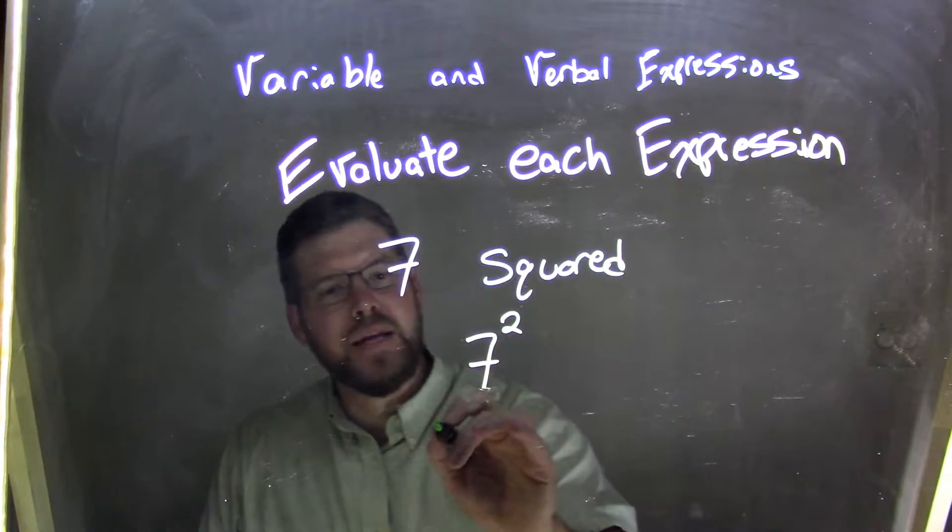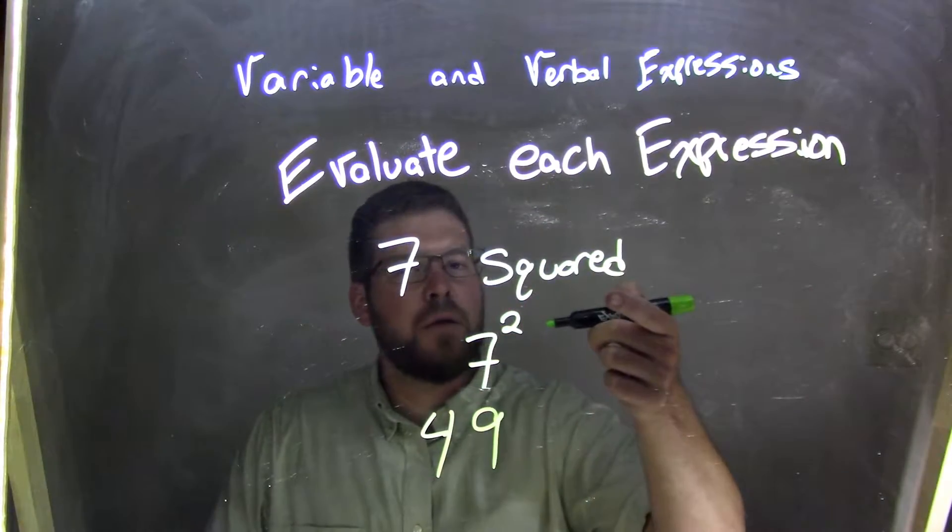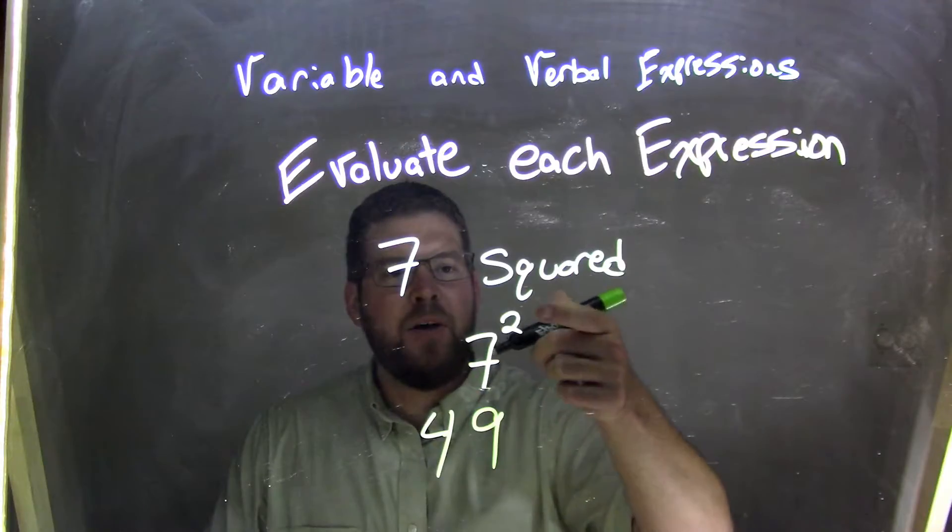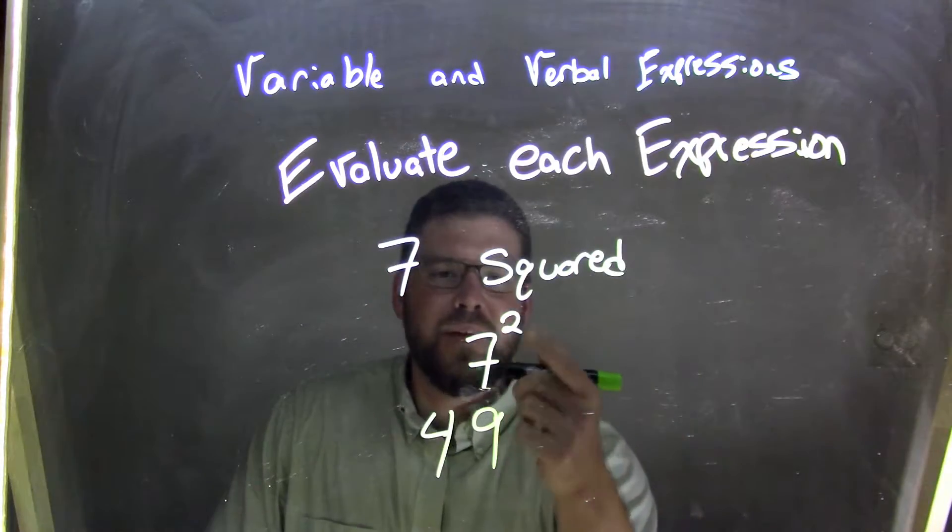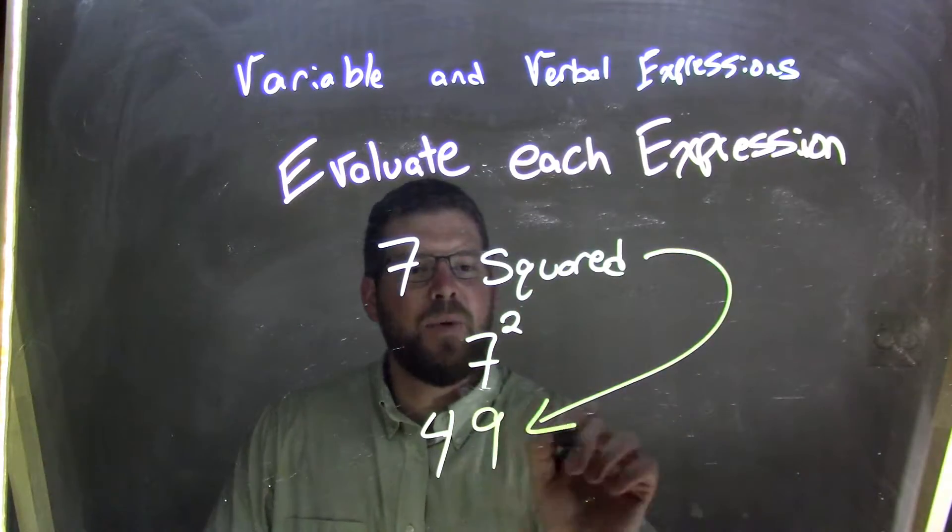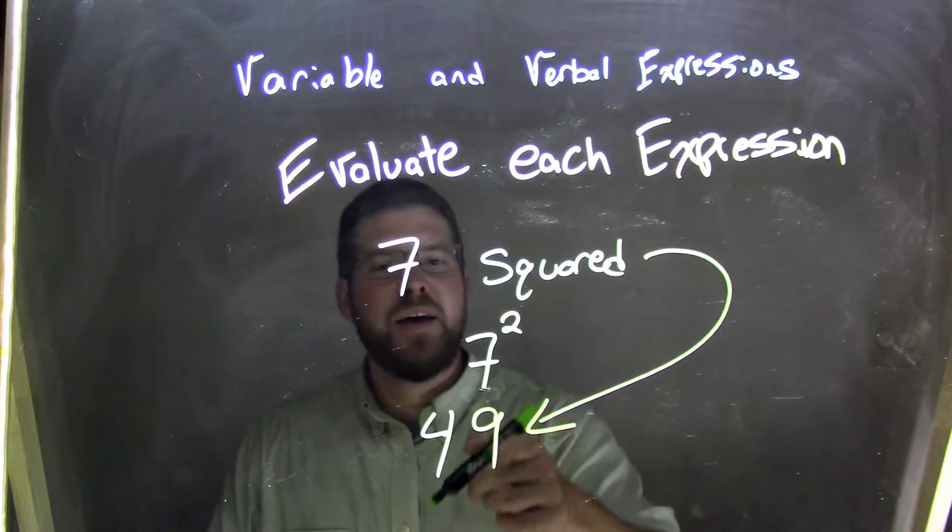Well, 7 times 7 is 49. So we have 7 squared, 7 to the second power, that's how we can evaluate that or write it as a variable expression. We evaluate it, we get 49. So we're evaluating that verbal expression, we got 49 because 7 squared is 49.